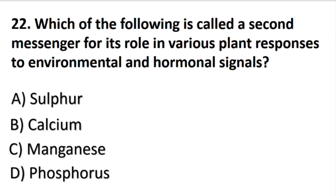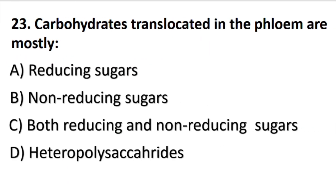Question number 22: Which of the following is called a second messenger for its role in various plant responses to environmental and hormonal signals? The answer is B part: calcium. Carbohydrates translocated in the phloem are mostly — B part: non-reducing sugars.